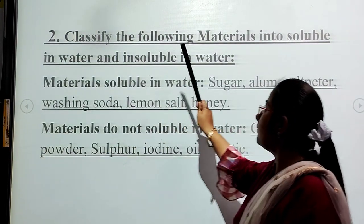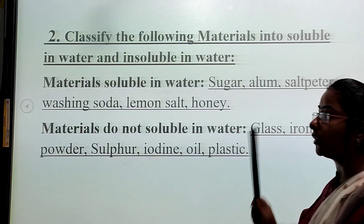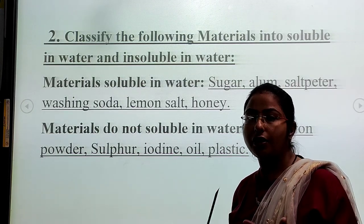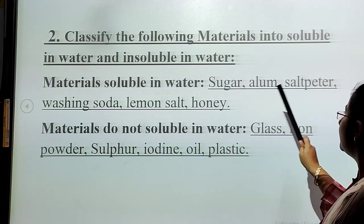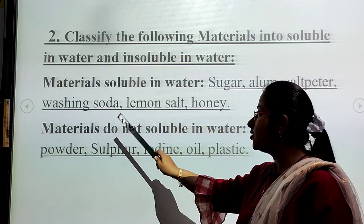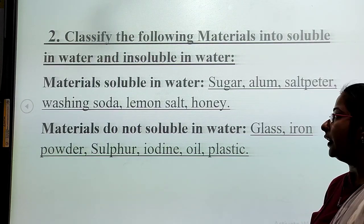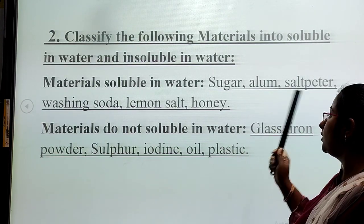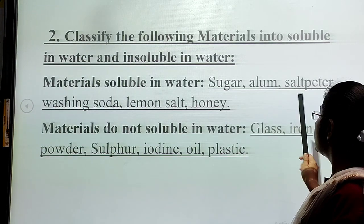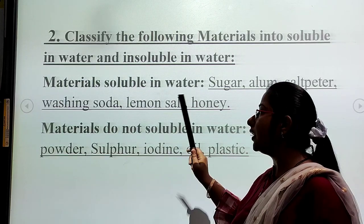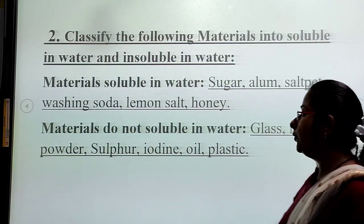Second classification: Classify the materials into soluble in water and insoluble in water. Materials soluble in water are sugar, alum, salt, baking soda, washing soda, lemon salt, honey. These are all soluble in water. Alum is also known as fitkari and is soluble in water.